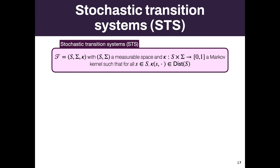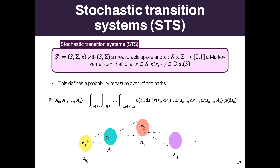A stochastic transition system is like a Markov chain: you have a set of states forming a measurable space, and a Markov kernel that tells us, from a state s, how it distributes in the future. From state s0, for example, you have some distribution over the next part of the system. The kernel tells you the probability distribution to reach the next possible states. Using these kernels repeatedly, you can define probabilities of paths in such a system — you can measure large families of paths.